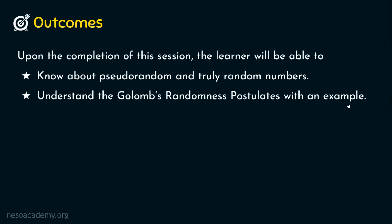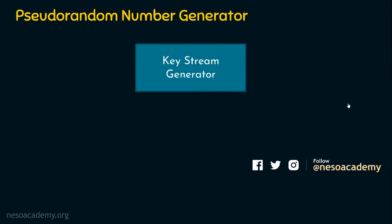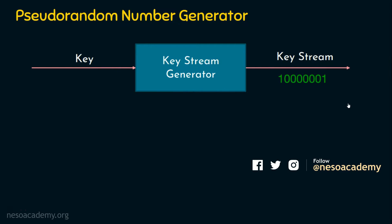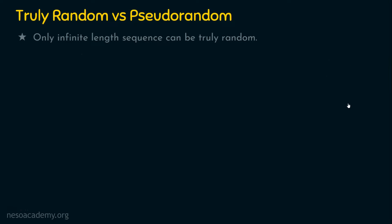Before stepping into the topic, let's quickly run through what a pseudo-random number generator is. When we have a keystream generator and we give any key as an input, it generates a keystream, and this keystream is expected to be random in nature. But practically speaking, this will not be the case because this random number is generated by a machine — it will not be truly random, but is referred to as pseudo-random.